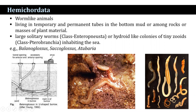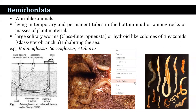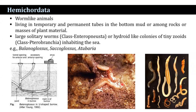Hemichordates are more or less worm-like in structure. They live in temporary and permanent tubes in the bottom mud or among rocks or masses of plant material. Hemichordates are large solitary worms belonging to class Enteropneusta, or hydroid-like colonies of tiny zooids — that is class Pterobranchia — inhabiting the sea.